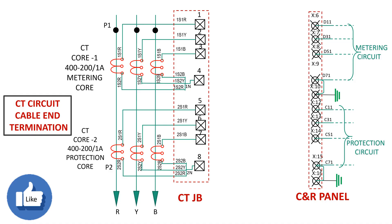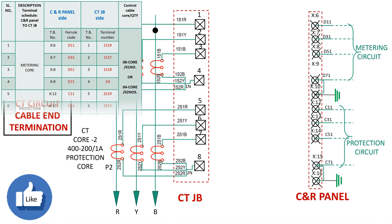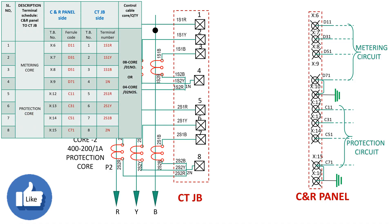Control cables — that is, control wires — are connected according to the termination schedule between the appropriate terminal blocks. Control cables are connected to the appropriate terminal bars such as X6, X7, X4, X8, X2, X1, and X5.